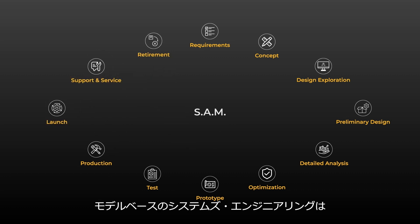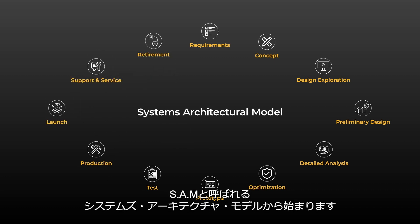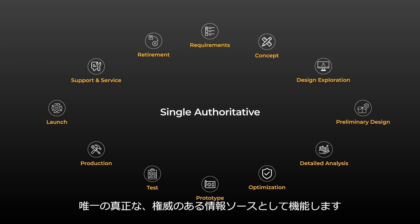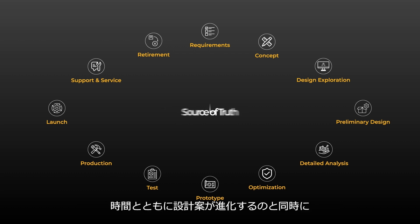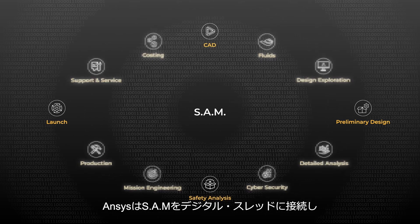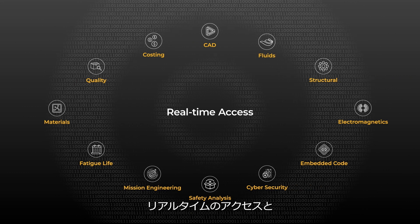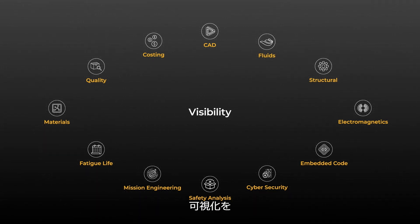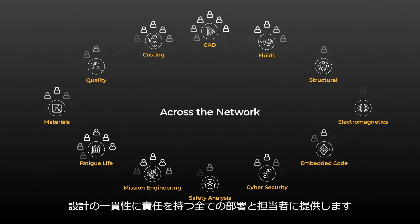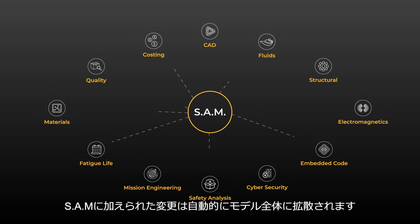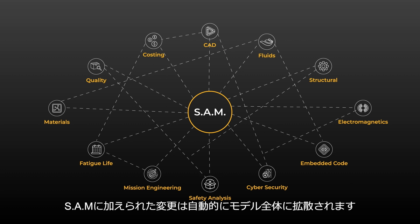Meant to replace static documents with intelligent data, model-based systems engineering starts with a SAM, or Systems Architectural Model. This descriptive representation of your product acts as a single, authoritative source of truth as your design evolves over time. ANSYS connects the SAM via a digital thread to your systems simulation and analysis toolchain, providing real-time access and visibility to all the engineers and departments responsible for design integrity.